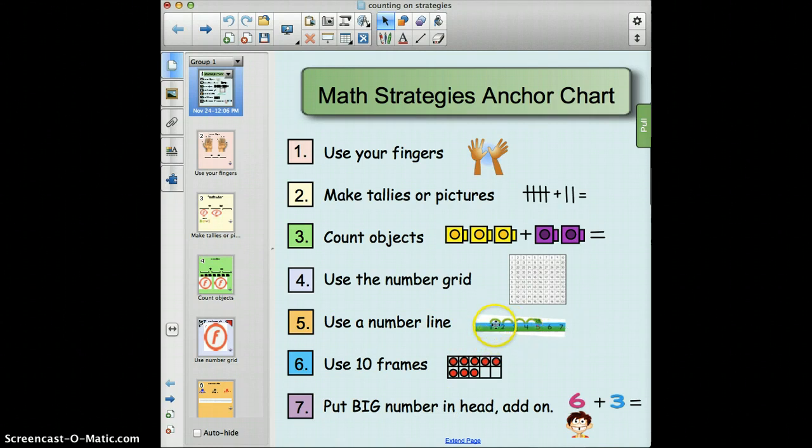That number grid is like a hundreds chart. Use a number line is number five, and this shows our frog jumping. So you start at one and it looks like they counted on - one, two, three, four, five. So one plus four equals five. And they use the frog jumpers which we have this exact model in the classroom. Number six is use ten frames with five boxes on top and five on the bottom for a total of ten boxes.